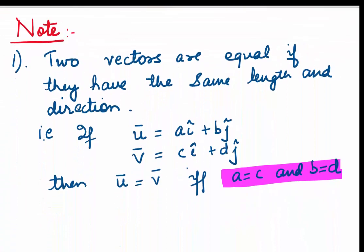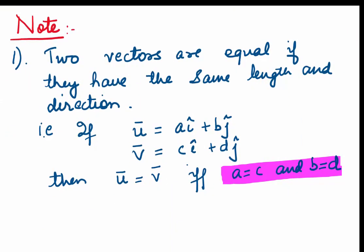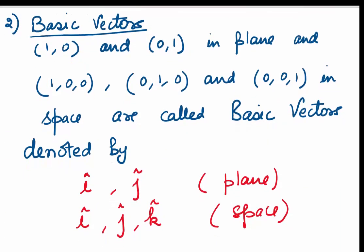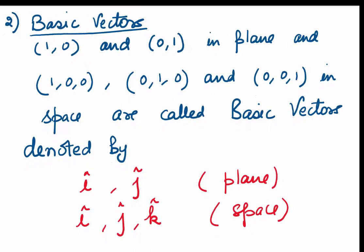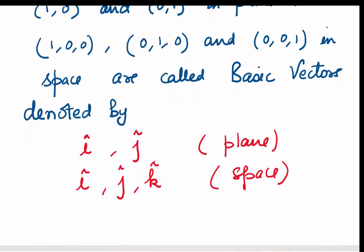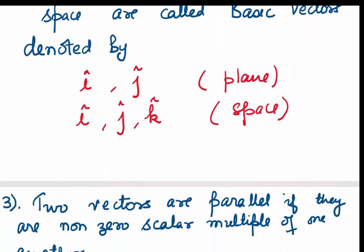A few things to note. Two vectors are equal if and only if they have the same length and the same direction. If u is ai + bj and v is ci + dj, then u equals v if and only if a equals c and b equals d. Second, we come across the notation of basic vectors — these are nothing but the unit vectors: (1,0) and (0,1) in the plane, and (1,0,0), (0,1,0), and (0,0,1) in space. In other words, in the plane the basic vectors are i and j, and in space, i, j, k are the basic vectors.